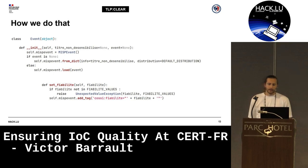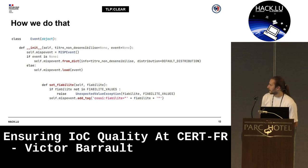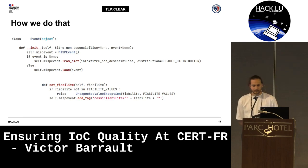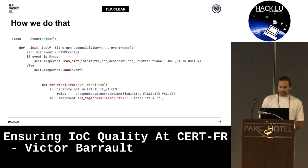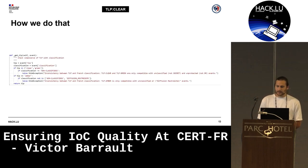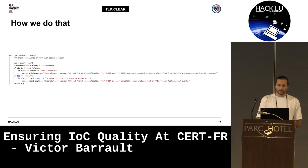Here is a simple example of how the internal library wraps around PyMISP objects. Here is a PyMISP event, and we are able to manipulate it with our own set of rules. For example, the lib provides a way to set the reliability of an event but ensures that the reliability level provided is a well-defined level — only values from the reliability values list can be added to an event. The internal lib also provides a way to check compliance, for example between French classification level and TLP level. It is verified that you don't create a French secret event that is TLP clear, which would be a bit of a problem.